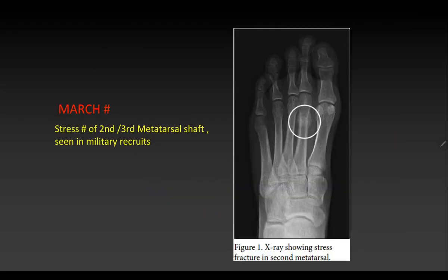Another named fracture is the March fracture, which is a stress fracture of the second or third metatarsal shaft seen in military recruits. When they go marching, too much pressure is applied for long periods of time, leading to stress fractures. You can see a fracture line with a lot of soft tissue edema.